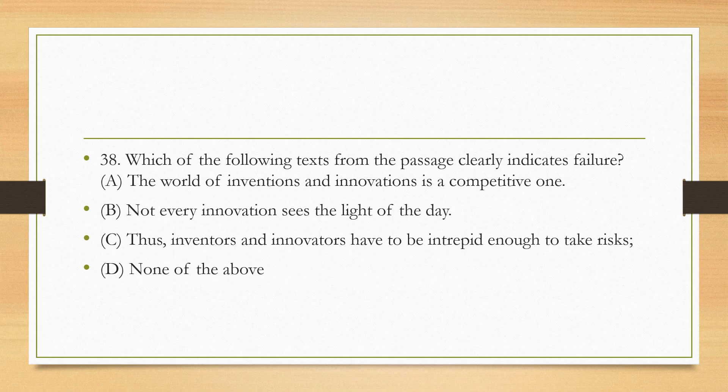Question eight: 'Which of the following texts from the passage clearly indicates failure?' Options: 'The world of inventions and innovations is a competitive one' — not a failure, it's about competition; 'Not every innovation sees the light of the day' — this could indicate failure; 'Thus inventors and innovators have to be intrepid enough to take risks' — not a failure, it's a reason to be daring; option D is none of the above. The only appropriate option is B: 'Not every innovation sees the light of the day.' The answer is B.